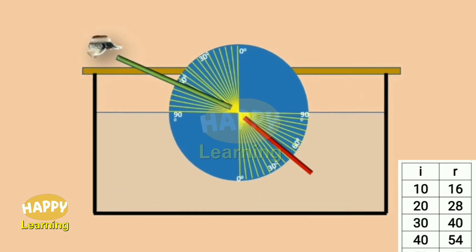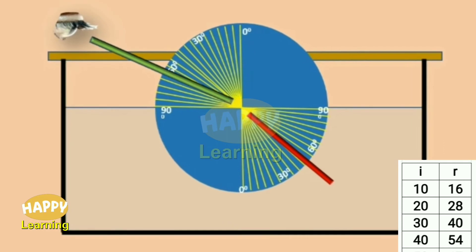You will observe that the angle in the water, that is the angle between the normal and the straw in the water is less, and the angle between the normal and the straw in the air is more. For the straw in water, in denser medium, the angle is smaller. And for the straw in air, in rarer medium, the angle is greater.